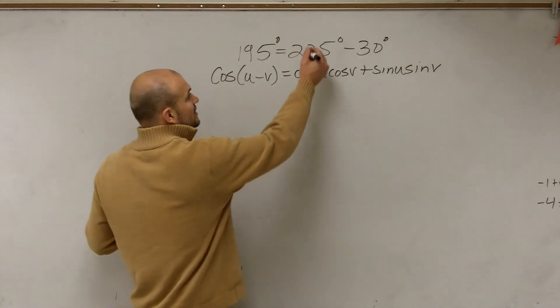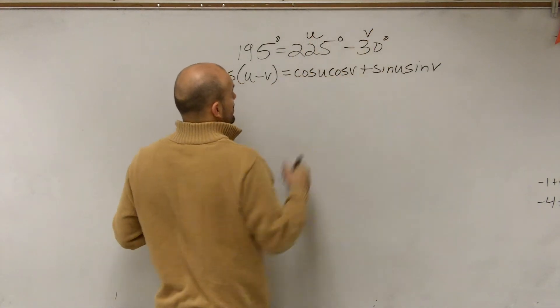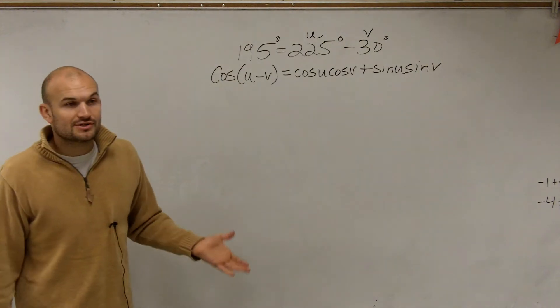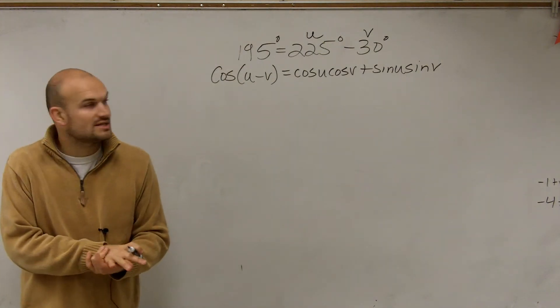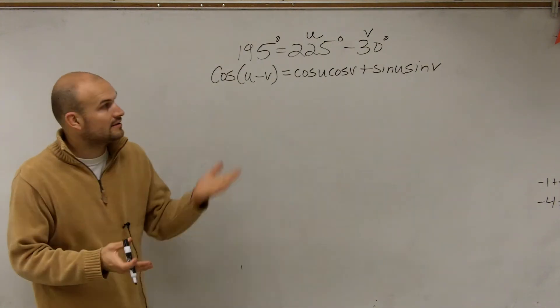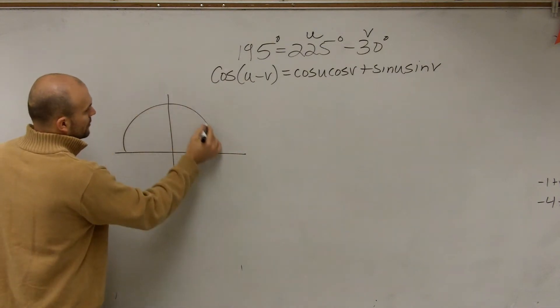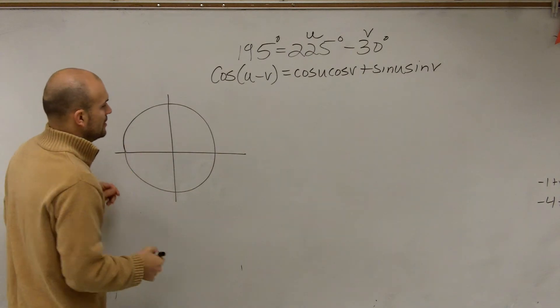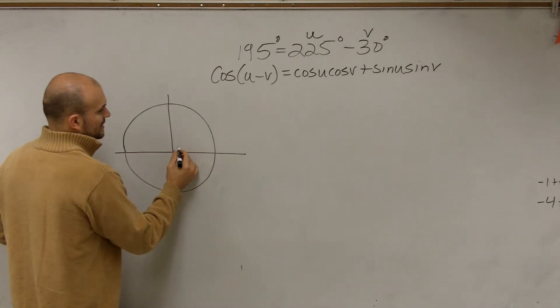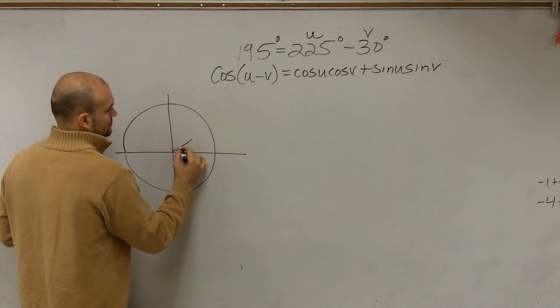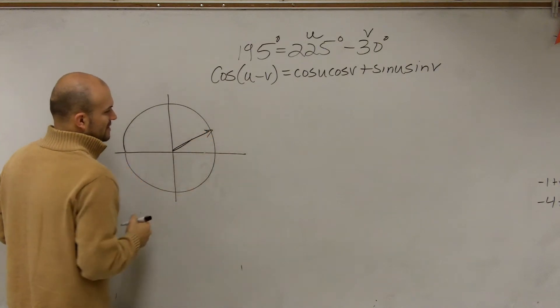We just need to understand what our u is and what our v. And now we need to understand, how can we evaluate for the cosine and sine of u and v? So I need to look at my unit circle, and I need to know where is the angle. Well, first of all, the angle is 30 degrees, it's right there.